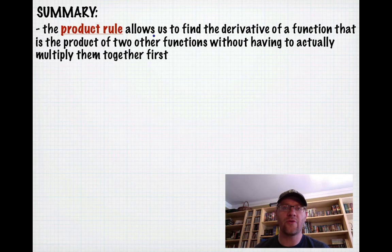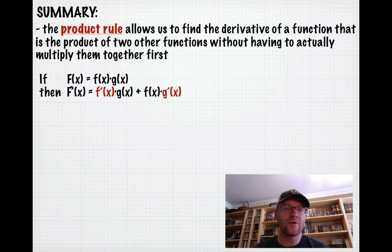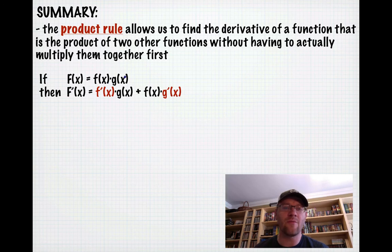In summary, the product rule allows us to find the derivative of a function that is the product of two other functions without multiplying them together first. If the original function is f(x)·g(x), then the derivative is f′(x)·g(x) + f(x)·g′(x). We take the derivative of one, multiply by the other, then switch — take the derivative of the other and multiply by the first.